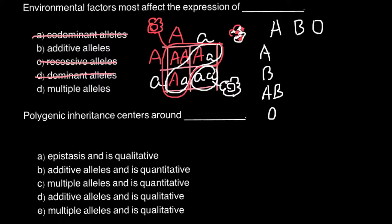No matter what the environment would be, it wouldn't affect the blood group of the child. If both parents have blood group A, they may have children with blood group A or O. If both parents belong to blood group O, their children can only have blood group O. So environment doesn't play a role here, and we can cross out multiple alleles.